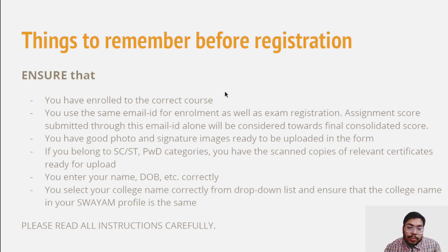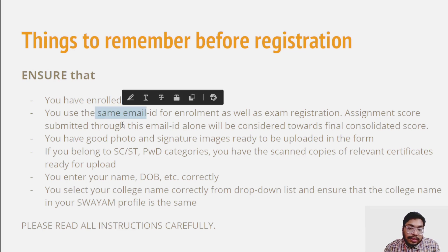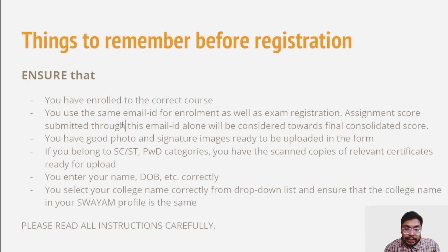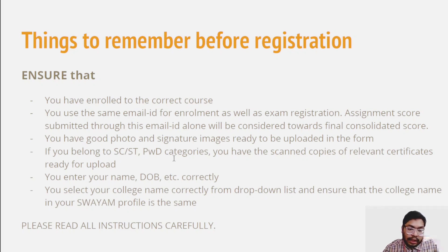Before exam registration, remember: you have to enroll first — course enrollment is the prerequisite for exam registration. You have to use the same email ID for both enrollment and exam registration. You also need a photo, ID, and SCST certificate if applicable. Then you have to enter your name, date of birth, and select your college name correctly if you want credit transfer.